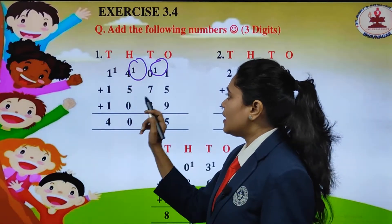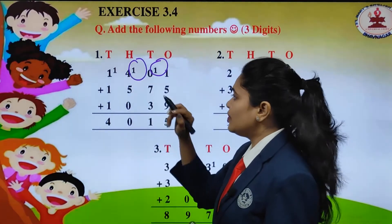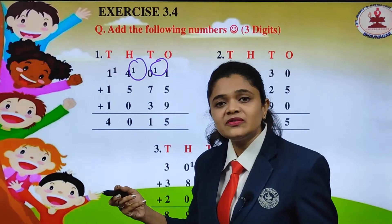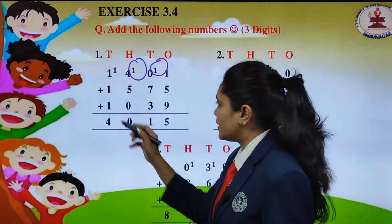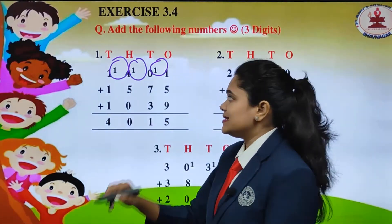Again now we will add the hundreds column. 1 plus 4, 5. 5 plus 5 will get 10. Again one carry, 0 down.